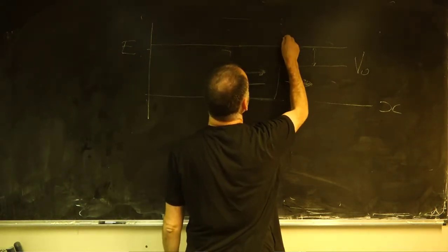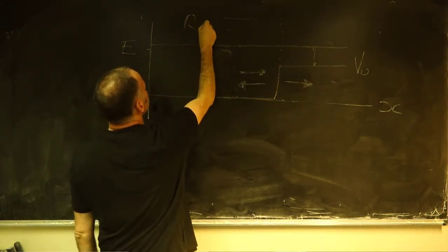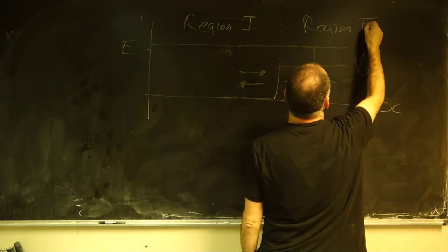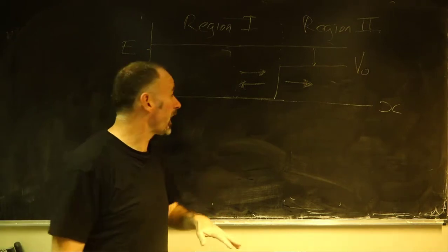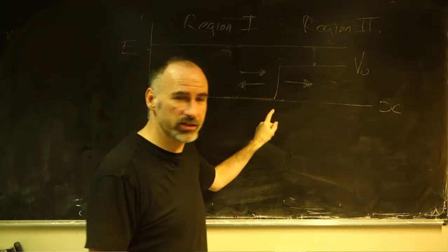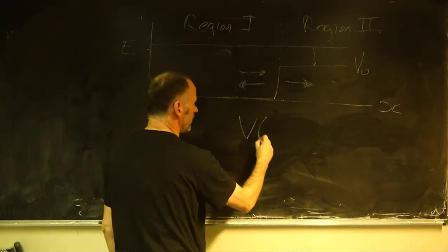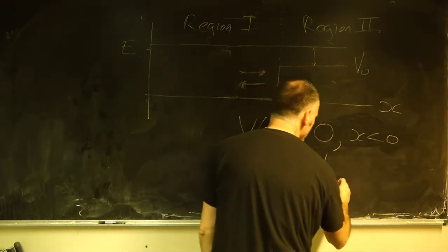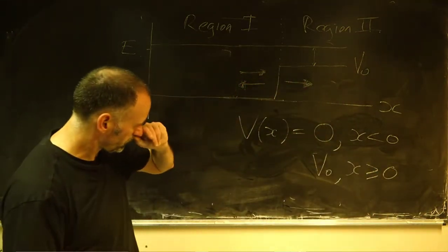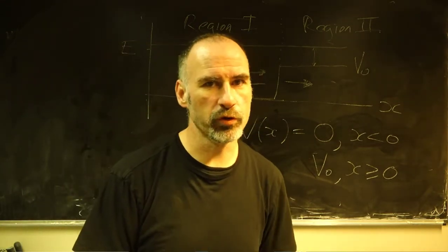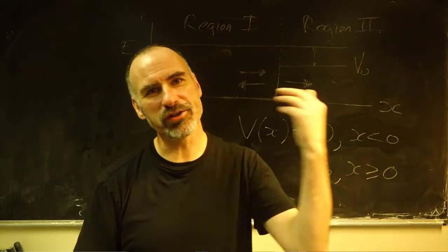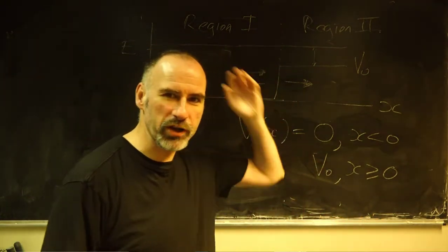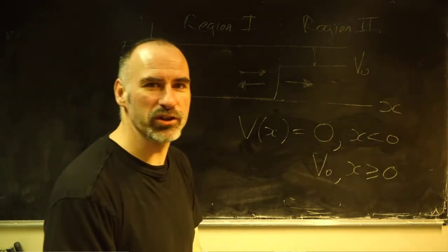We're going to define region 1 and region 2. Also, note that the potential changes instantaneously here. The potential V(x) is defined as 0 for x less than 0, and V0 (constant) for x greater than or equal to 0. That means it changes instantaneously. Think about what that means in terms of the force. Like delta functions, plane waves, completely frictionless surfaces, and spherical cows — we're back in the land of idealisations. But idealisations allow us to really cut to the core of the key physics.